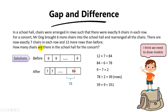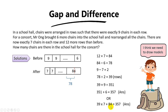To find the number of chairs in the school hall for the concert, you can either take 39 times 9 then plus 6, which gives 357, or you can take 39 times 7 then plus 84, and you will still get the same answer of 357.